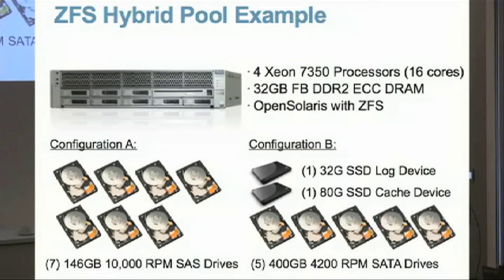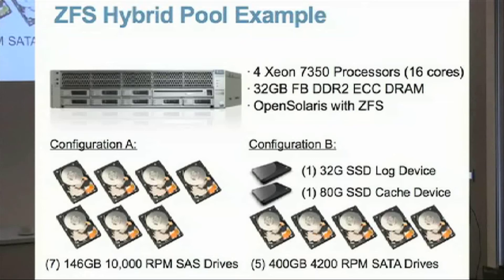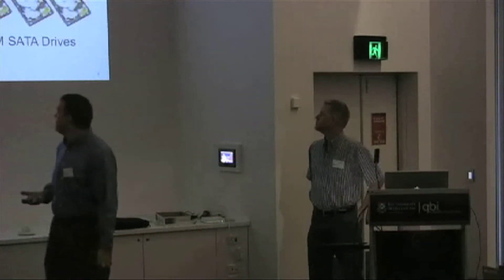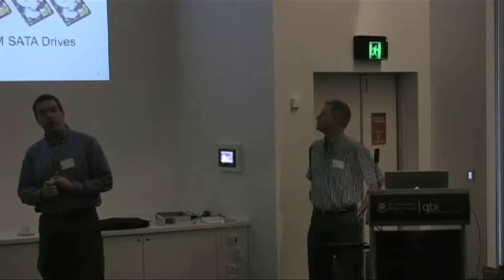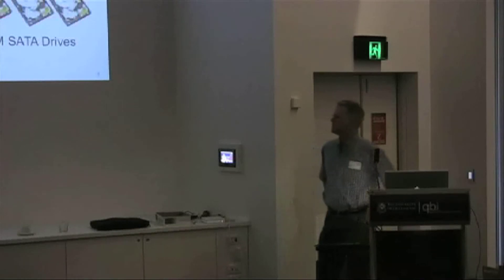Here's an experiment that Brendan and the Fishworks team did. They said, let's compare price-performance, not just performance. With a fixed number of dollars, they bought two storage configurations. One was the traditional approach: a few low-capacity, high-performance spinny disk drives. In the other configuration, they bought five high-capacity, low-power, low-performance disk drives and added a write cache and a read cache. These two configurations were basically within epsilon of the same cost, and they benchmarked them to see how performance and other characteristics varied.